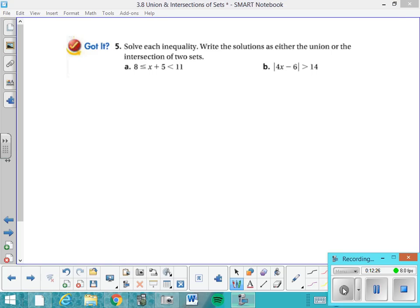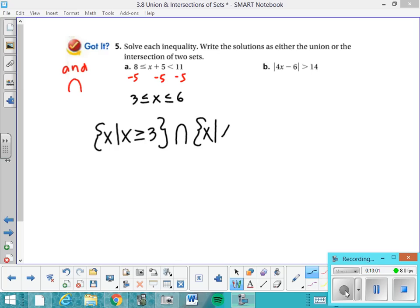So I'm looking at this first one, and I can see that since it's written all together, it's an and, so it's going to be an intersection. So I'm just going to solve by normal methods, and I get 3 is less than or equal to x, which is less than or equal to 6. And then I can rewrite that in set notation that I guess it would be, so I'm going to write a set of all numbers x such that x is greater than or equal to 3, and close that set intersected with the set of all numbers x such that x is less than or equal to 6.